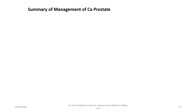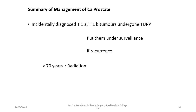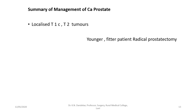Summary of the management of CA prostate: For incidentally diagnosed T1A and T1B tumors after TURP, put them under surveillance with DRE, PSA and TRUS. If recurrence occurs, consider radiation for patients older than 70. For younger patients, consider radical prostatectomy. For patients diagnosed with localized T1C or T2 tumors, consider radiation for patients older than 70, and radical prostatectomy or radiation for younger and fitter patients, followed by surveillance.